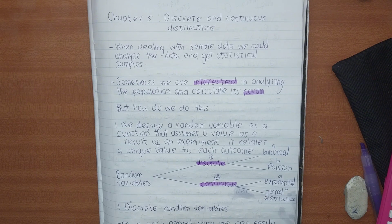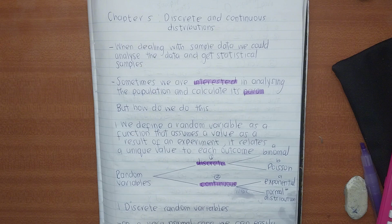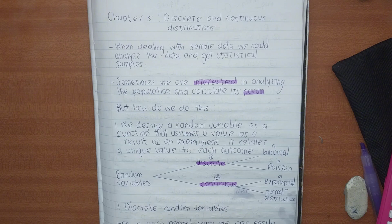Remember in chapters one, two, three before we got to probability, we were talking about samples. A sample is when you are taking a portion of the whole population and making conclusions based on that sample — not looking at the whole population. The outcomes we find from the sample we call sample statistics. Now we are interested in knowing what happens to the whole population.